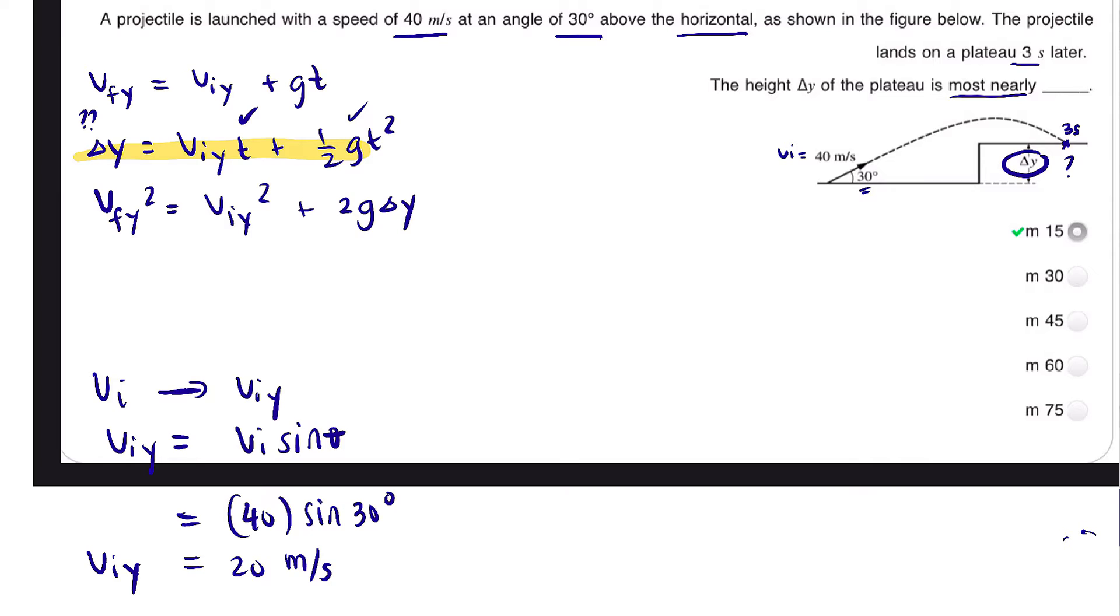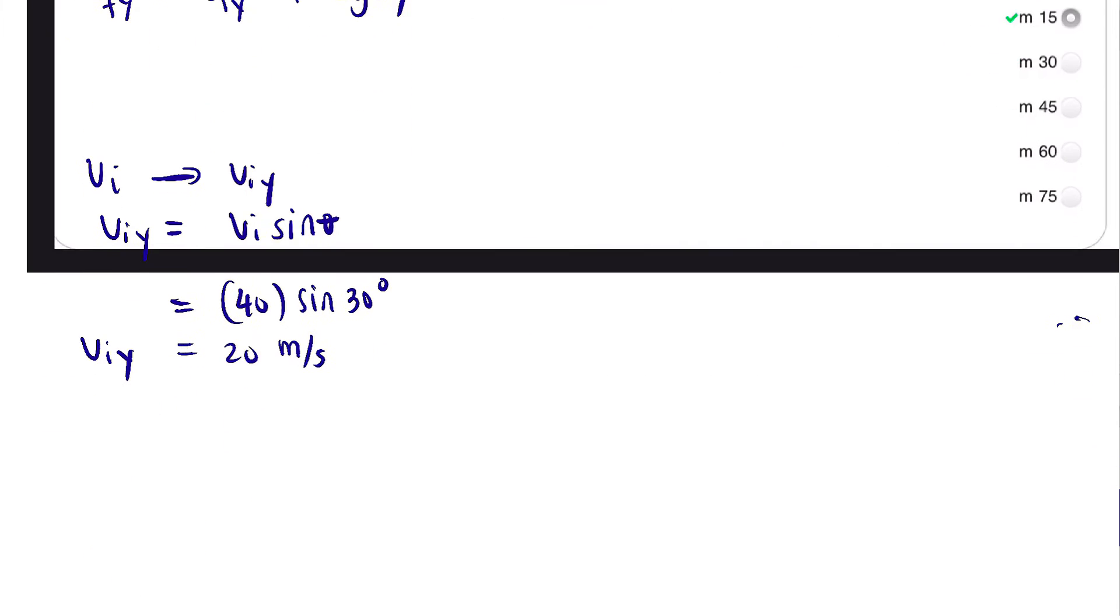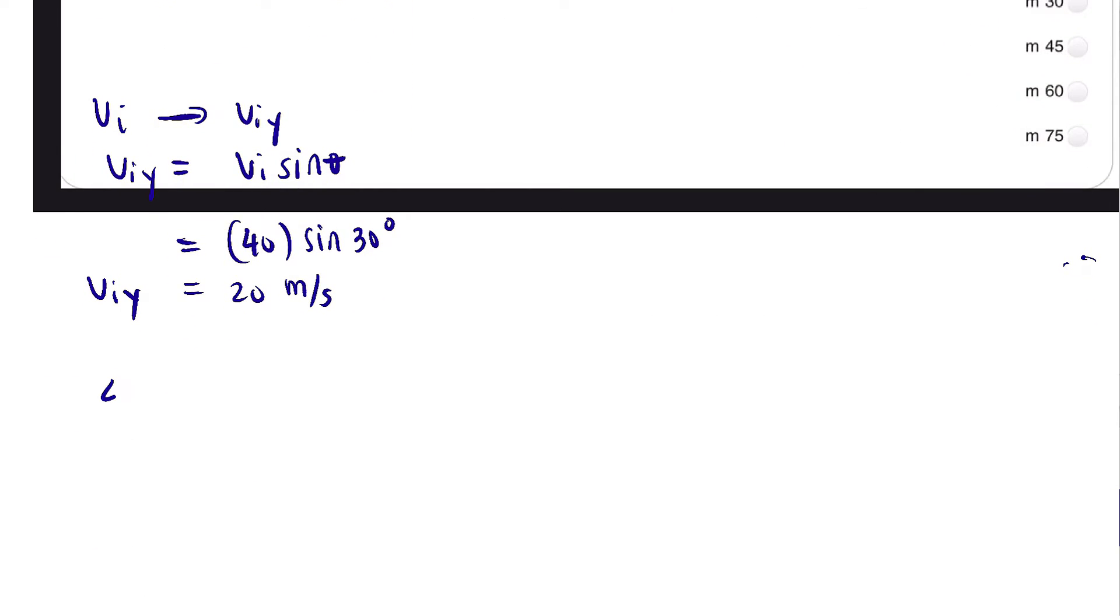Now we use this value to solve for the height of the plateau. We use the second equation: Δy = viyt + ½gt². Substituting our values, the initial vertical velocity viy is 20, multiplied by the time, which is three seconds, plus one half g. Our g here should be negative 9.8.